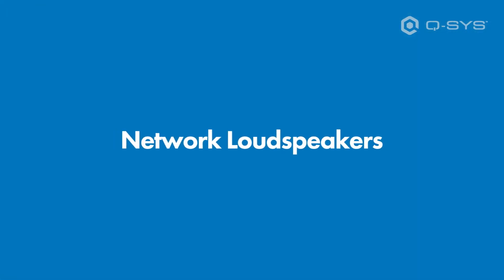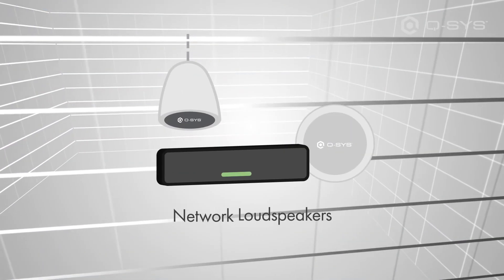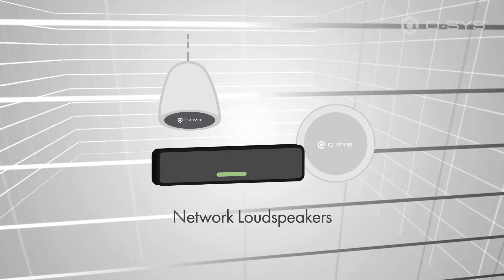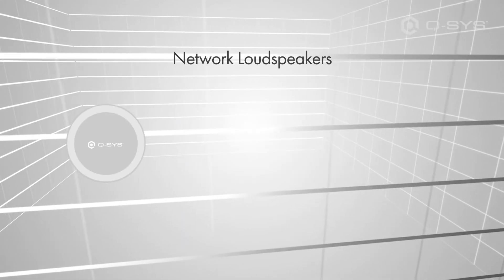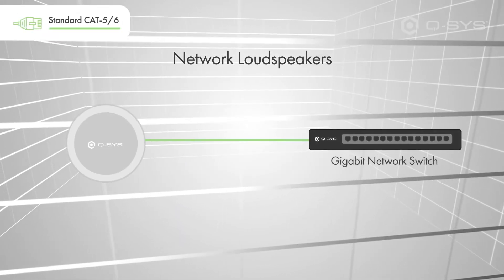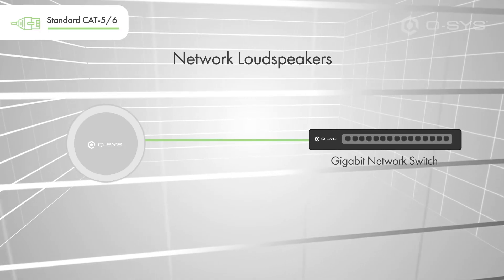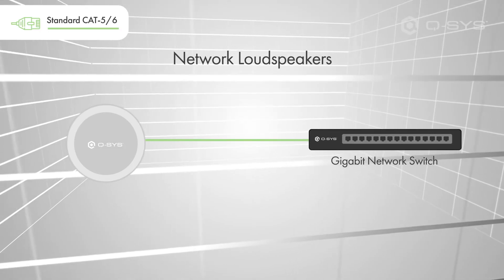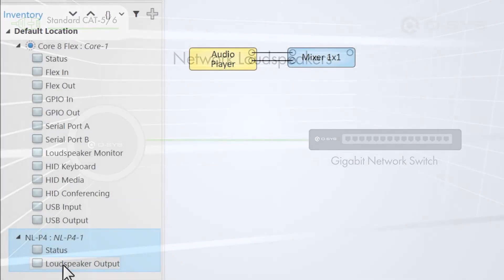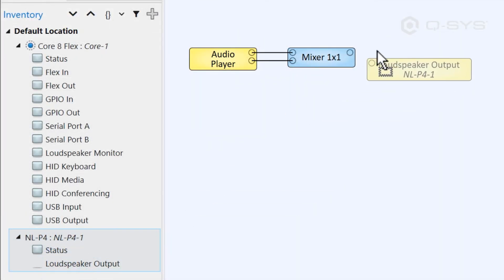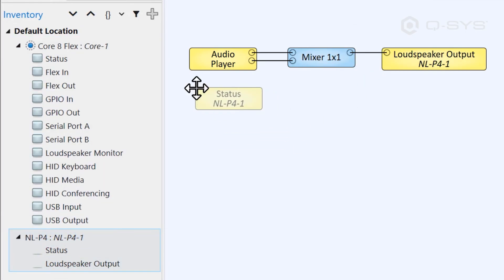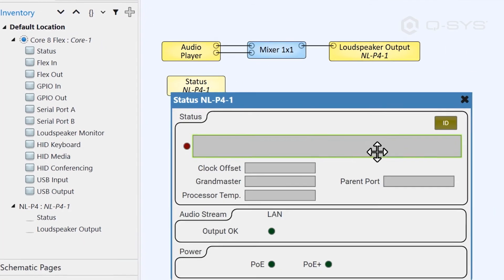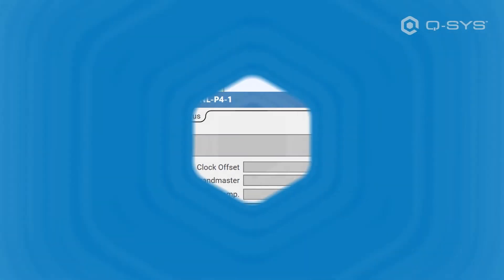In certain cases, you may not need an amplifier at all. Q-SYS network loudspeakers are powered over ethernet and allow for a loudspeaker to be connected to the system using nothing more than a network cable. Drag-and-drop software integration makes it extremely easy to deploy these loudspeakers, which, like any network device, can be monitored and managed directly within Q-SYS.